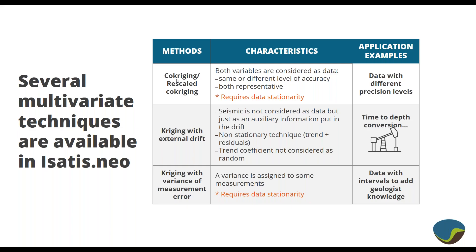Negative weights in abstract theory are perfectly fine — that's just what comes out of the kriging equations. But in practice, the real world doesn't perfectly follow all the assumptions of a stationary random function. Negative weights, when they get attached to a high outlier value, give you a negative number multiplied by a big positive number, which can produce negative estimates, and that's undesirable. That's a potential issue with ordinary co-kriging.